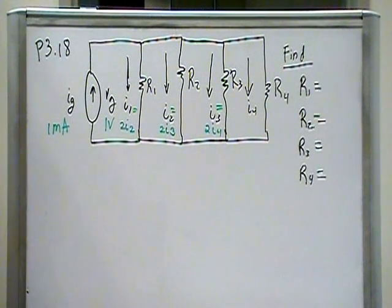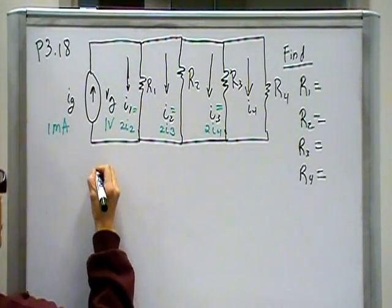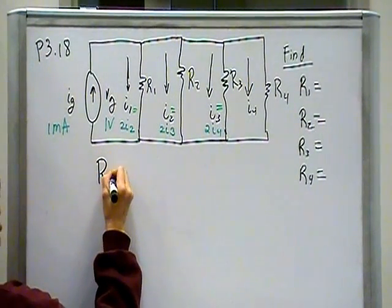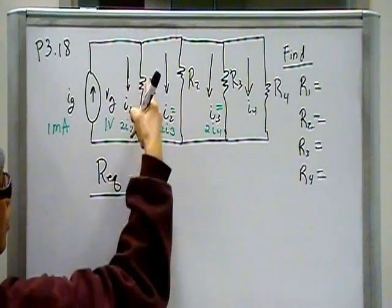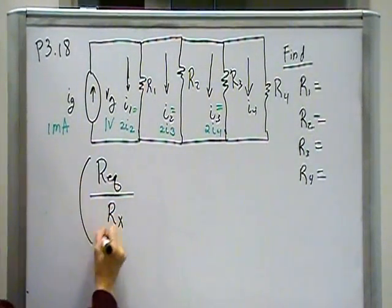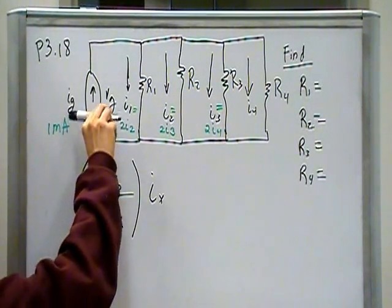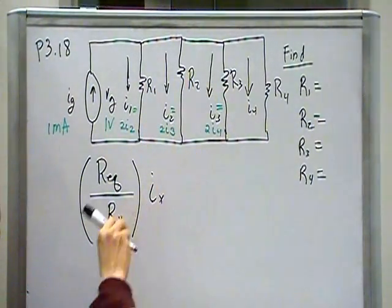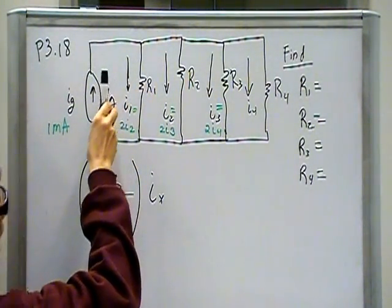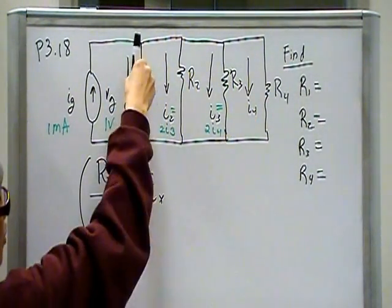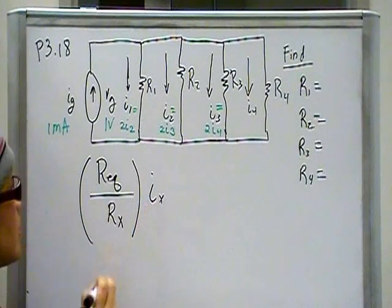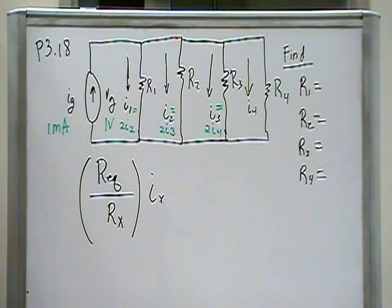So to solve this one, since this section is on current division, we're going to use the current divider law. Current division says that the total current is going to split like this: It's going to split as Req, the total resistance seen by the source, over the branch resistance in question times the current IS. So that tells me that this 1 milliamp is going to split in four ways, and it's going to split however the total resistance divided by the resistance of that particular branch times the total current. That's what we're going to use as our tool to design this particular circuit.